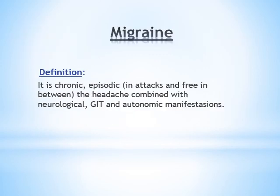We'll start by migraine. By definition, migraine is a chronic, episodic condition — episodic means coming in attacks with a period of freedom in between the attacks. The headache is usually combined with neurological, gastrointestinal, and autonomic manifestations.